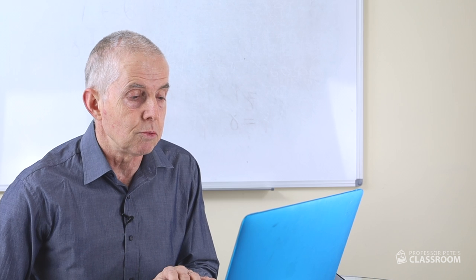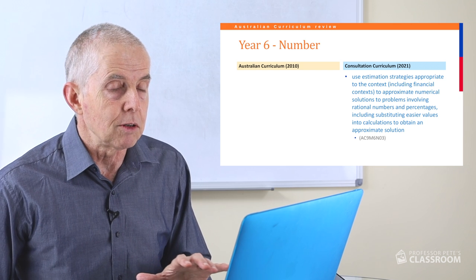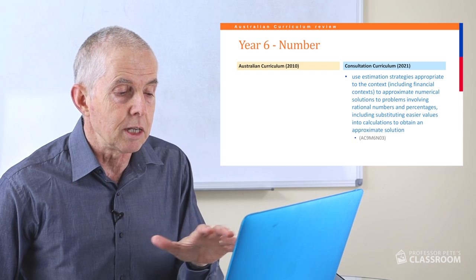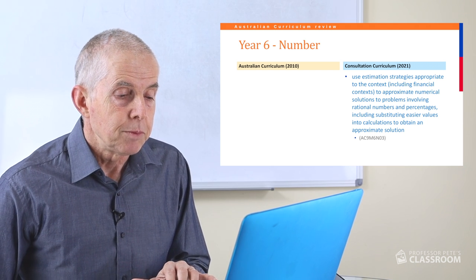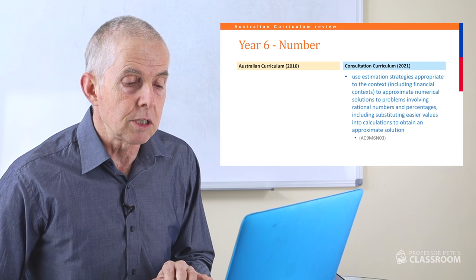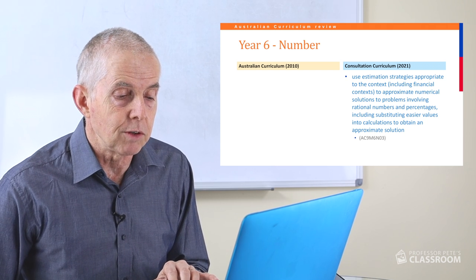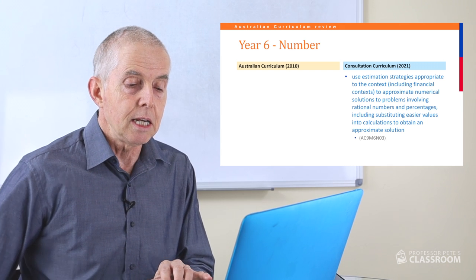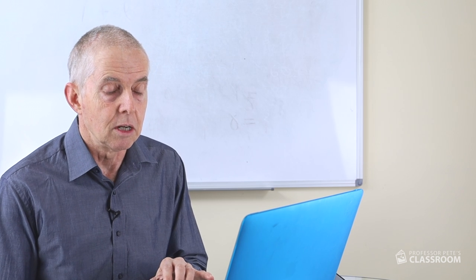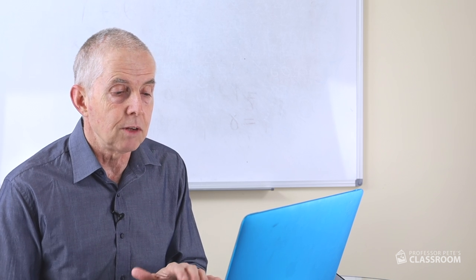The addition of solving problems and simplifying calculations is a good one. The third content descriptor for number is completely new — it does not have an equivalent in the existing curriculum. This new content descriptor says: use estimation strategies appropriate to the context, including financial contexts, to approximate numerical solutions to problems involving rational numbers and percentages, including substituting easier values into calculations to obtain an approximate solution. There's lots of detail here and lots of opportunities for good learning activities — I really like it.